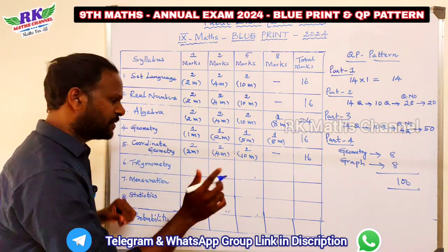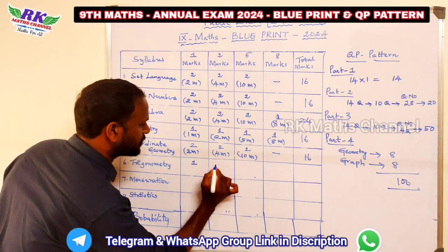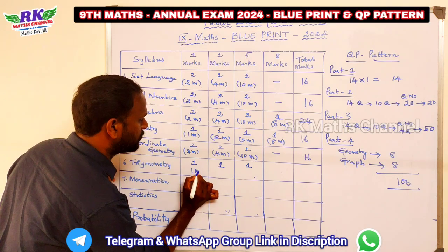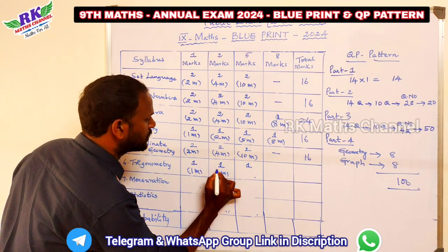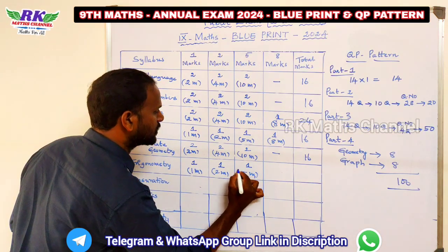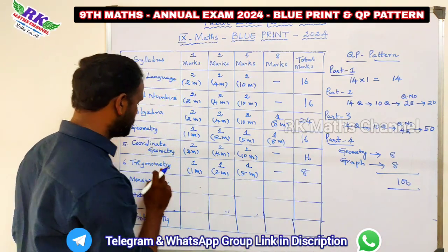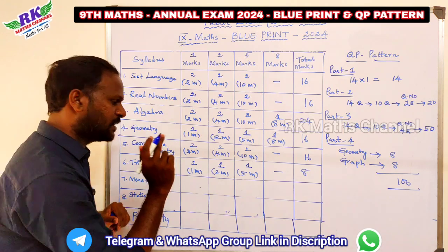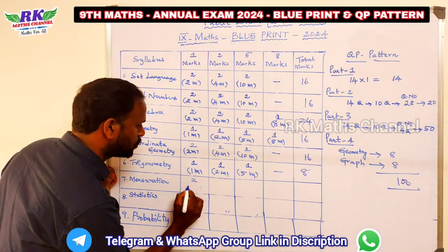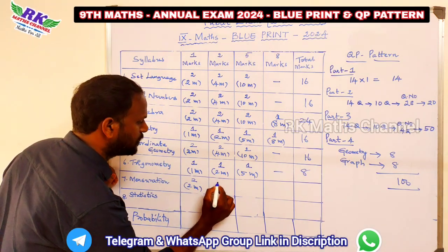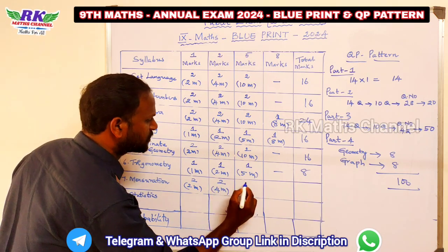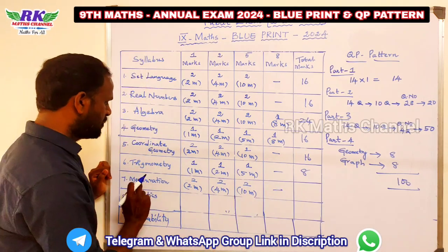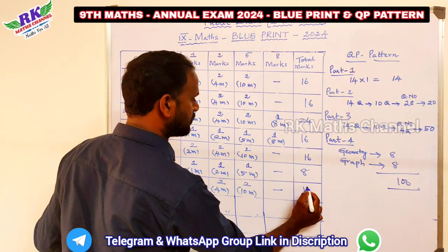For trigonometry: 1, 1, 1, 1 — then 1 mark, 2 marks, 5 marks — so the total is 8 marks. For mensuration: 2 marks, 2 marks, 2 marks, 5 marks, 2 marks — so the total for mensuration is 16 marks.